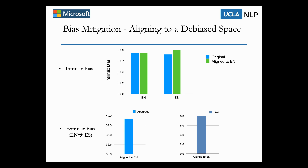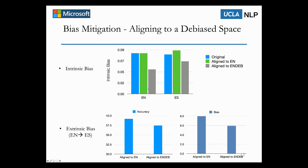In this paper, we examine an existing bias mitigation method by aligning the multilingual BERT embeddings to a debiased English space. The top row is the result for intrinsic bias analysis, and the bottom one is the result for extrinsic bias analysis where we transfer from English to Spanish. For both cases, we found that aligning to a debiased English space helps to reduce the bias, but it cannot completely remove the bias.